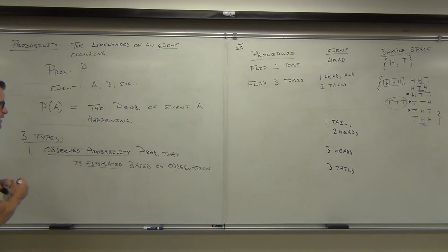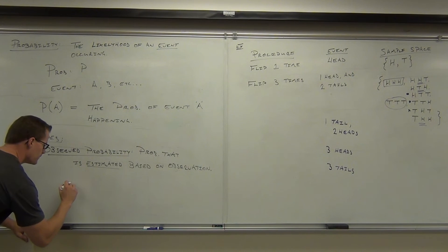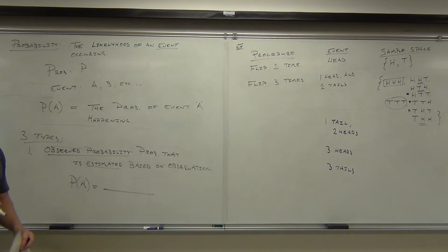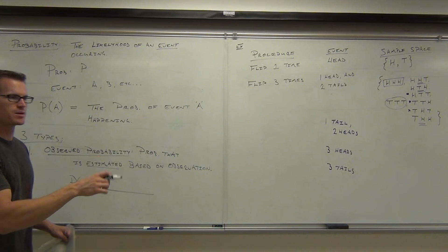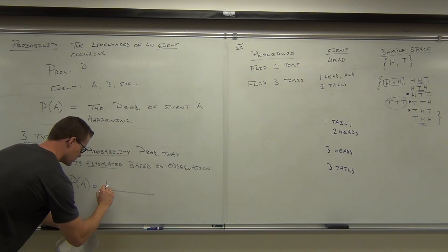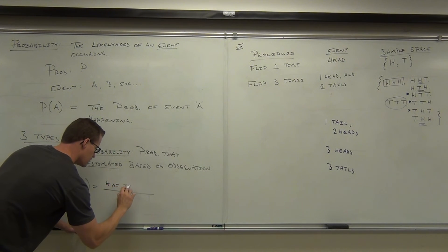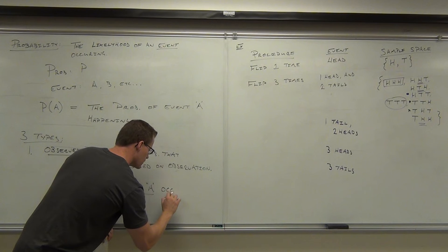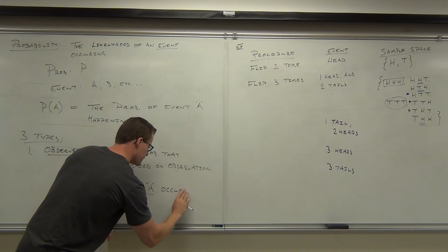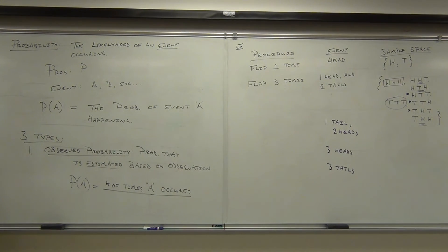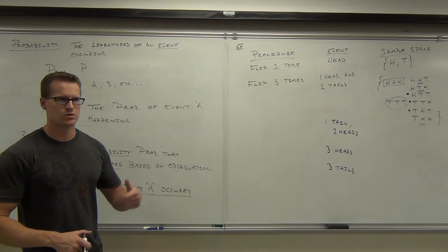And fortunately, it's not too hard to figure out. If we want to find the probability of A here, all we do is we take the number of times A occurred divided by the number of times you perform that procedure. So, number of times A occurred, remember A is your event. Number of times A occurred, you just divide it by the number of times your procedure was repeated. So, the number of times you did that thing.